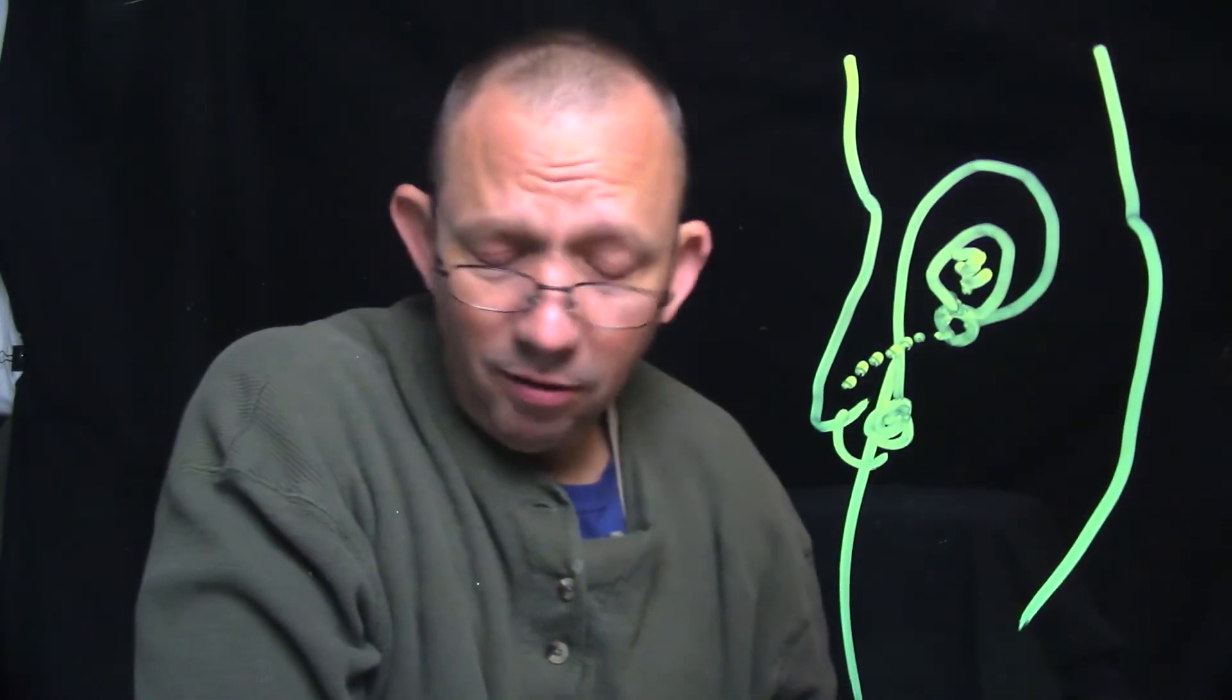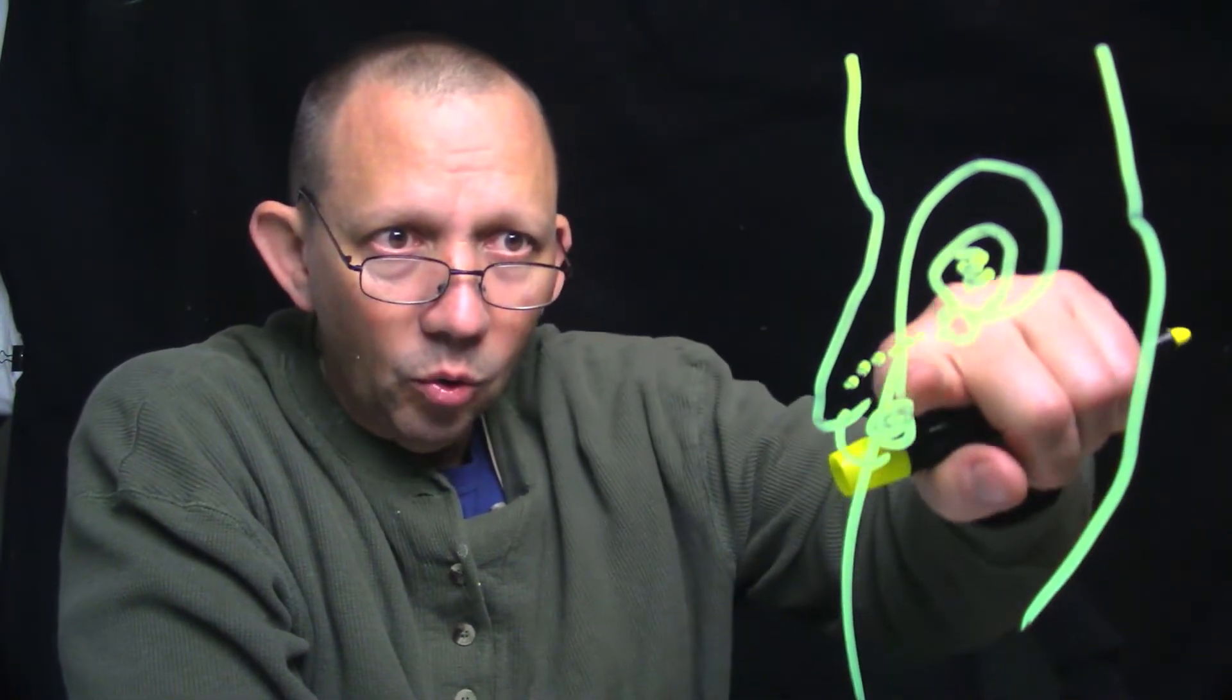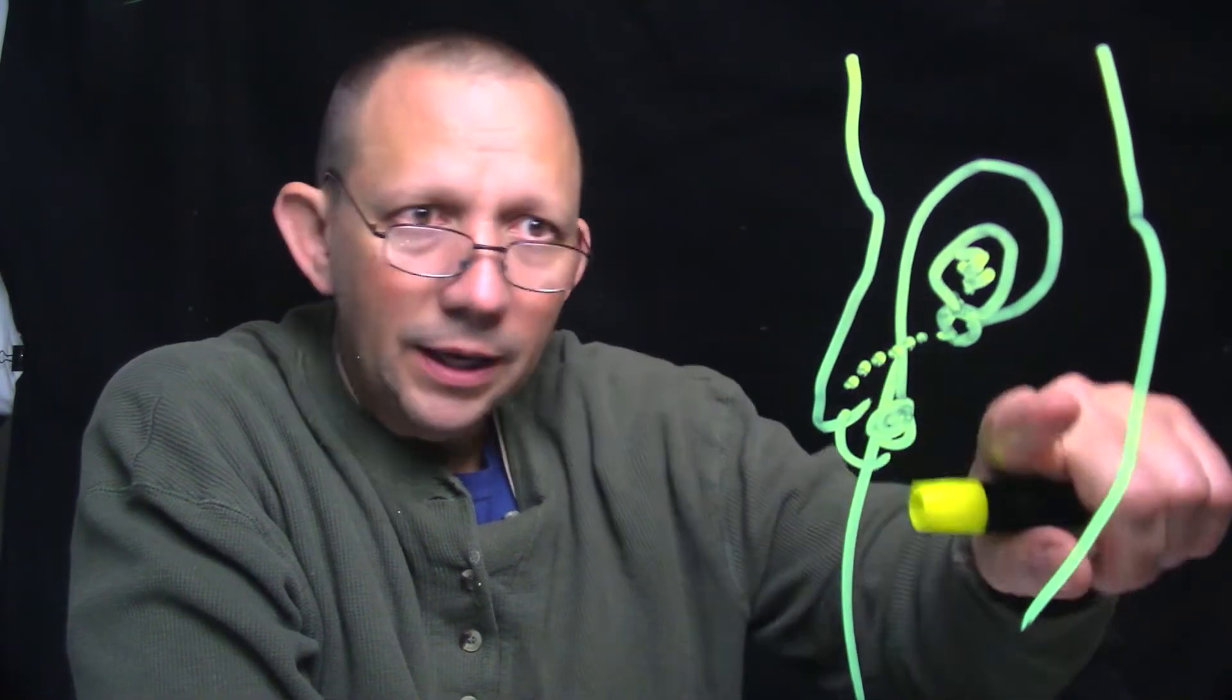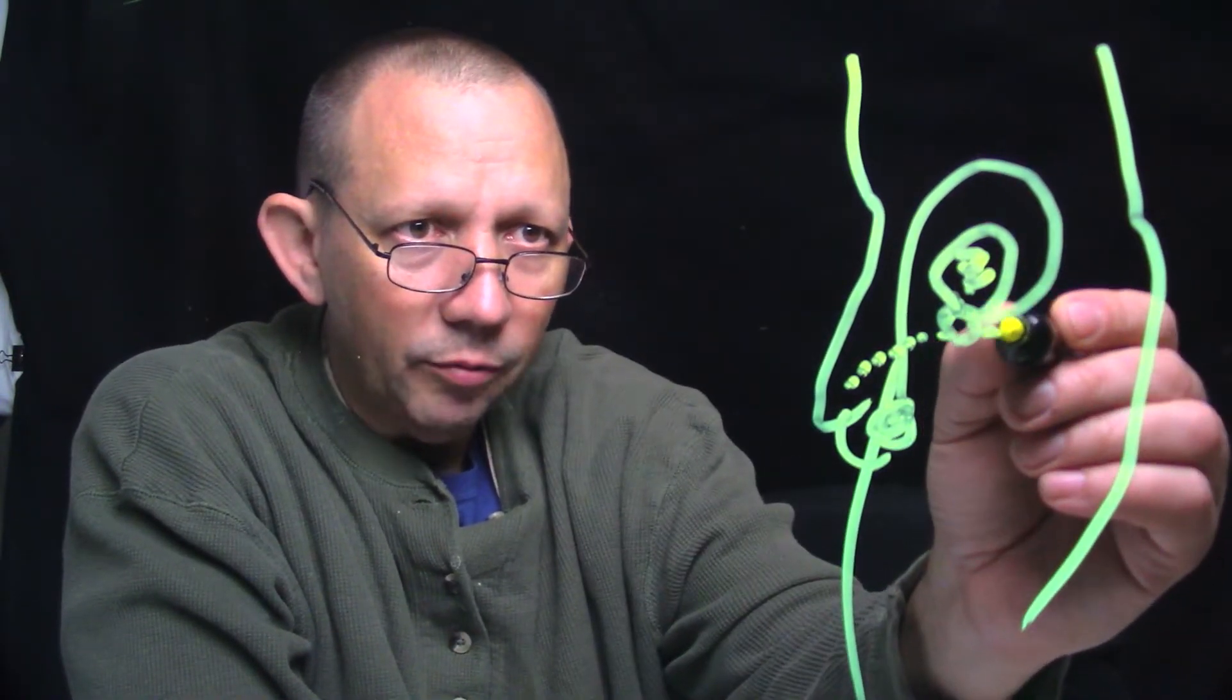The vas deferens is going to go way up inside the body. It's quite long, actually. It's a smooth-muscled cord that goes from the epididymis all the way up and transports sperm into this area.